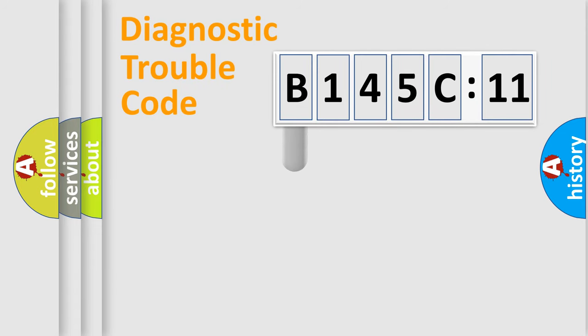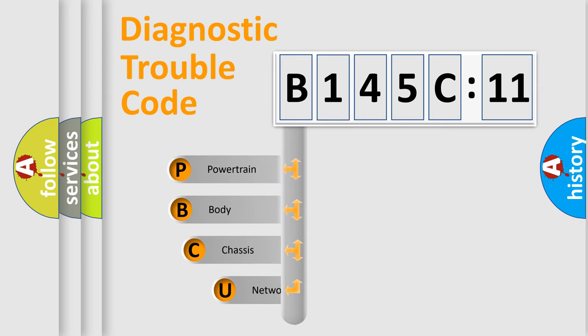First, let's look at the history of diagnostic fault code composition according to the OBD2 protocol, which is unified for all automakers since 2000. We divide the electric system of automobiles into four basic units.